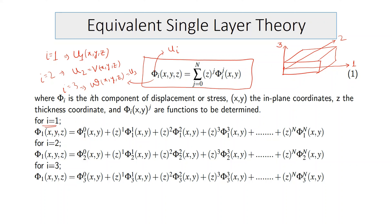In expanded form for i equals 1: phi_1(x, y, z) equals phi_1^0(x,y) times z^0 plus phi_1^1(x,y) times z^1 plus phi_1^2(x,y) times z^2, and so on to the Nth order. Similarly expanded for i equals 2 (u2 or v) and i equals 3 (u3 or w). This gives the complete displacement field for the laminate.